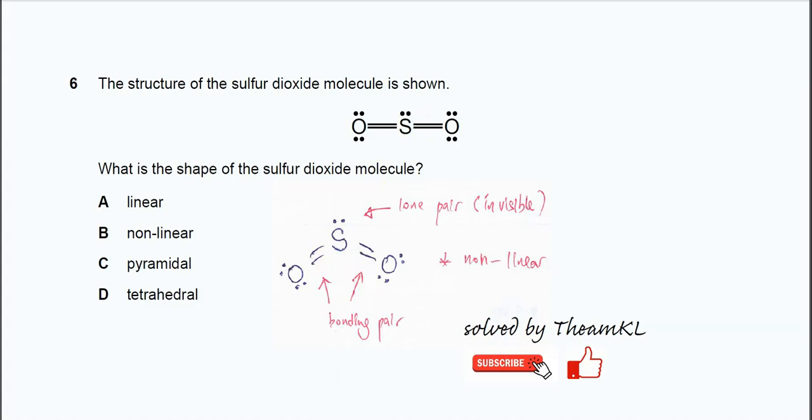It has three electron pairs surrounding it. So it's one lone pair and two double bonds, so these are two bonding pairs. If you look at the sulfur, it has a non-linear geometry.